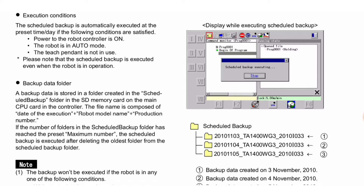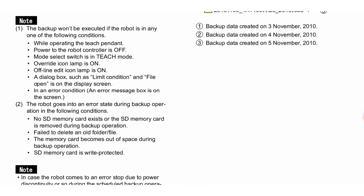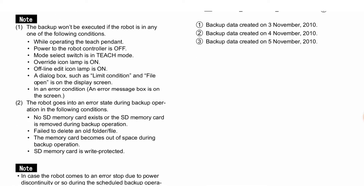If the number of folders in the scheduled backup folder has reached the preset maximum number, the scheduled backup is executed after deleting the oldest folder from the scheduled backup folder. Note: first, the backup will not be executed if the robot is in any one of the following conditions — while operating the teach pendant, or power to the robot controller is off.